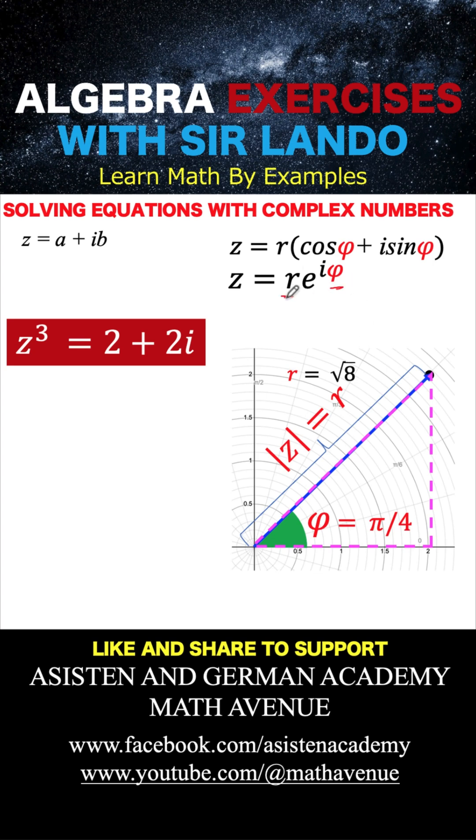So we now know what is the angle. We now know what is the radius. Then, we can now represent our complex number z to be equal to r e raised to i phi, where r is equal to the square root of 8, which is this radius, and the angle phi is this pi over 4. This is in the exponential form of the complex number z.